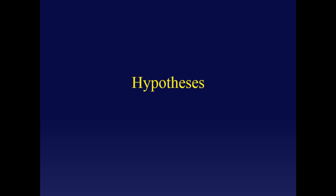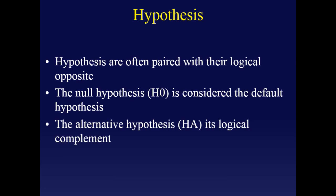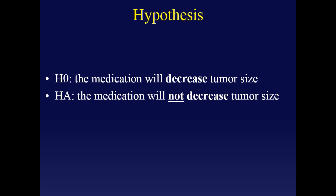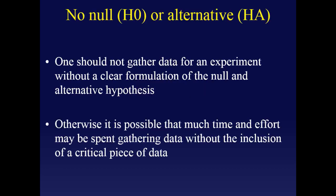A hypothesis is basically a proposed explanation for a phenomenon. A key aspect of good statistics is having a good hypothesis. They're often paired with their logical complement — the null hypothesis as the default and the alternative as its opposite. Examples would be: the medication decreases tumor size, and the medication does not decrease tumor size. Pitfall one is no hypothesis. Before you really start gathering data, have a hypothesis you're looking for; otherwise you could spend a good bit of time going through data without really getting the data you need.